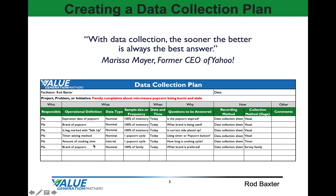Because of that, we've listed several data collection items that we'd like to understand. First, we identify the operational definition. In this first line item, I'm responsible to collect the data. The operational definition is the expiration date of the popcorn. The data type is nominal. The sample size is 100% of inventory, done today. The question I'm asking is: is the popcorn expired? We'll record that on our data collection sheet — it's a visual check; we're going to look at the popcorn to see what the expiration date is.